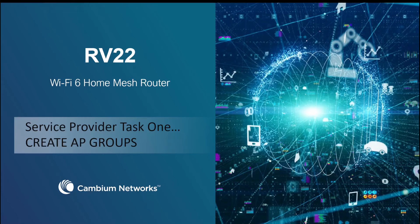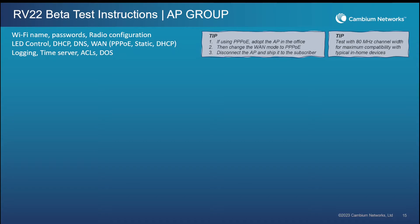The first thing the service provider needs to do to test the RV22 is create AP groups. These are really important because this is where we put all those things we normally associate with networks, like Wi-Fi names, passwords, and networking configurations.